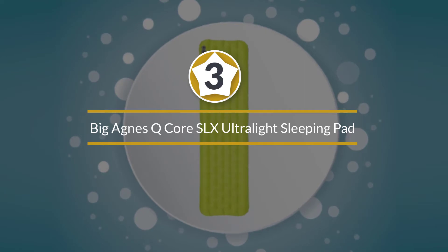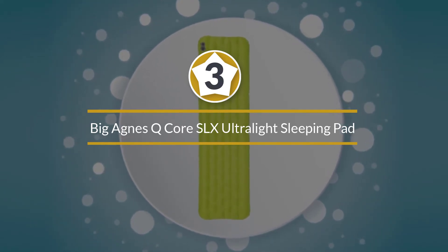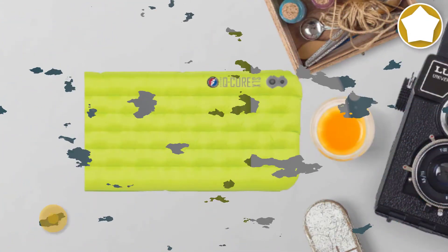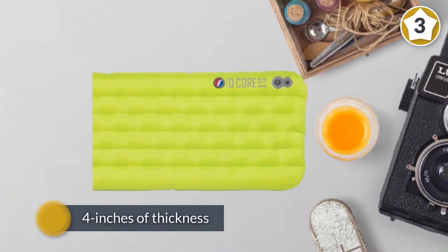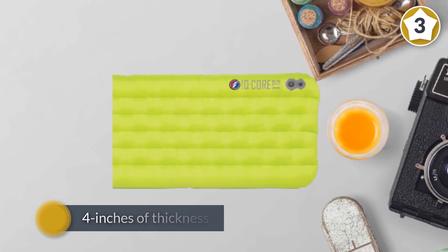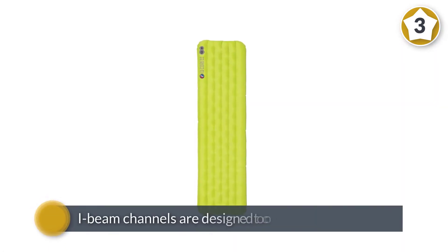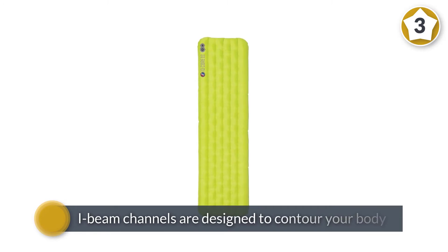Number 3. Big Agnes Q Core SLX Ultralight Sleeping Pad. A rectangular and super cushy inflatable sleeping pad, the Big Agnes Q Core SLX is like sleeping on air in the backcountry. With 4 inches of thickness, this pad gets the award for providing the most comfortable sleep.